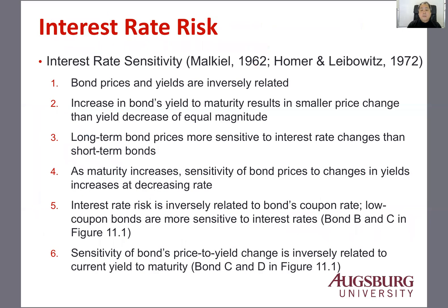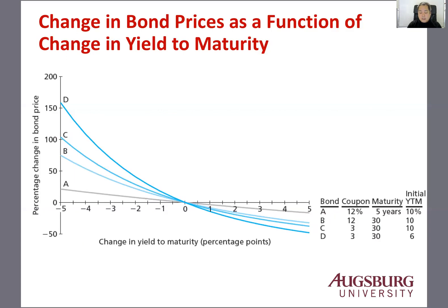Finally, the sensitivity of bond prices to yield changes is inversely related to the current yield to maturity. Comparing C and D, which have different yields to maturity — C is higher and D is lower — the lower YTM bond D is more sensitive.